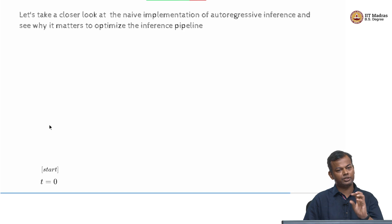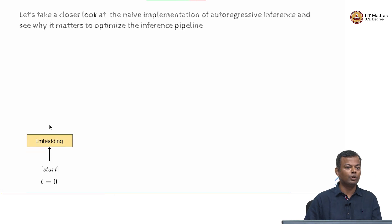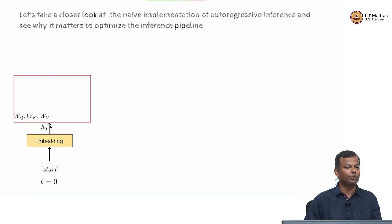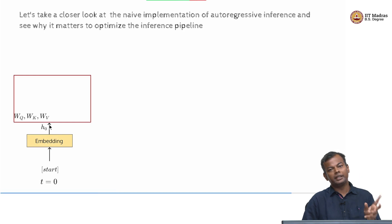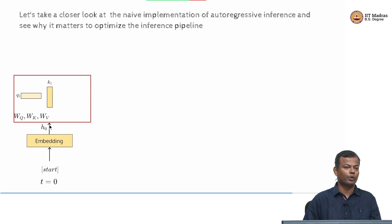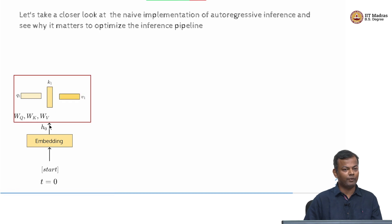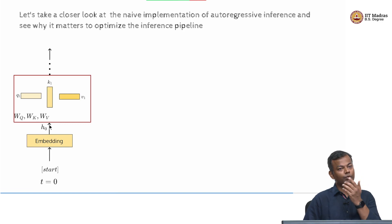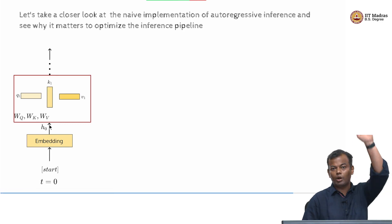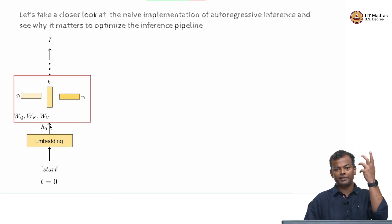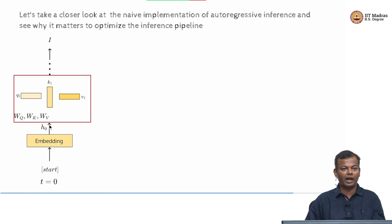You start with the start token at time step equal to 0, then you pick up the embedding of this token, then you do the key, value, and query transformations. You get the query Q1, key K1 and value V1 for this particular token. Then you do this throughout the transformer layers and finally predict something at the output - let's say in this case, you predict the word 'I'.